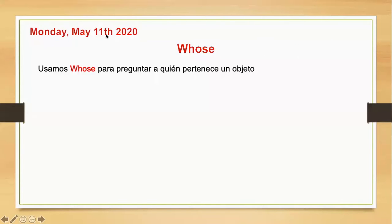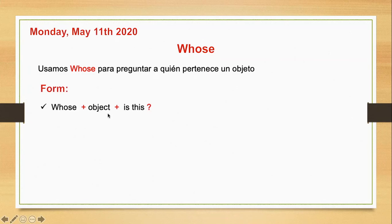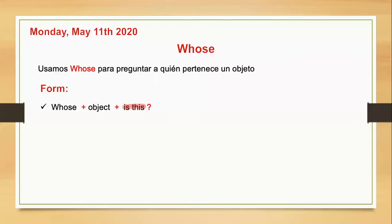Entonces hoy vamos a ver cómo preguntar a quién le pertenece algo. There are two ways to ask. Tenemos dos formas de preguntarlo. Number one: whose + object + is this. Tenemos primero 'whose', que significa 'de quién'. Luego vamos a colocar el objeto por el que vamos a preguntar. Y finalmente vamos a colocar 'is this', porque estoy hablando de una sola cosa — un solo color, un solo lápiz, un solo libro.